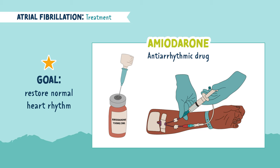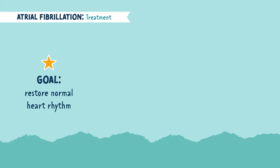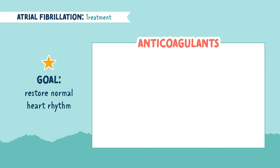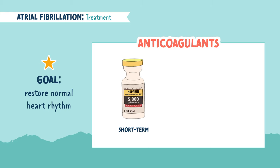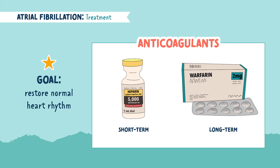A major point of treatment is based on the fact that this rhythm puts our patients at risk for blood clots. To combat this, we will begin anticoagulation therapy. We will start with short-term anticoagulants like heparin IV, which will then bridge or transition to a more long-term treatment like oral warfarin or Coumadin. This therapy may continue permanently if a patient lives in chronic AFib.